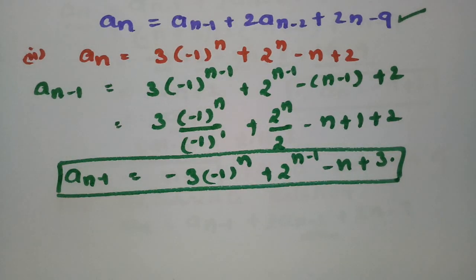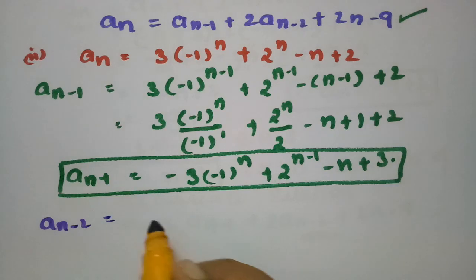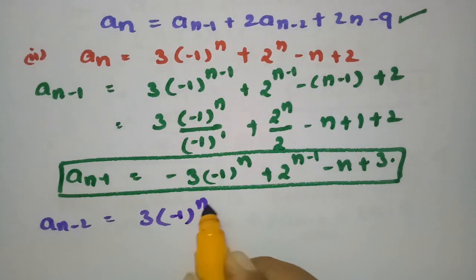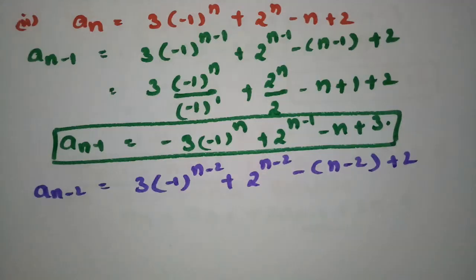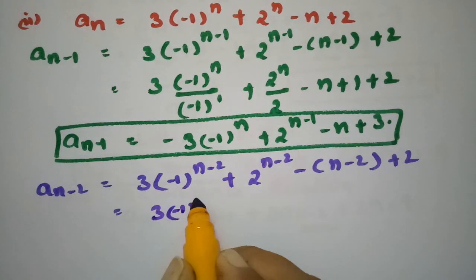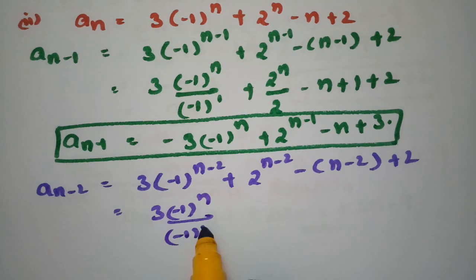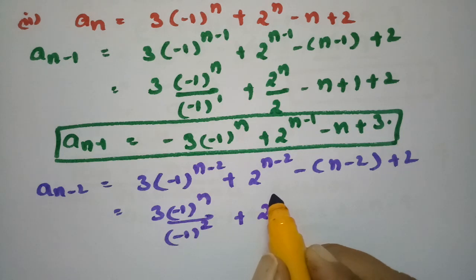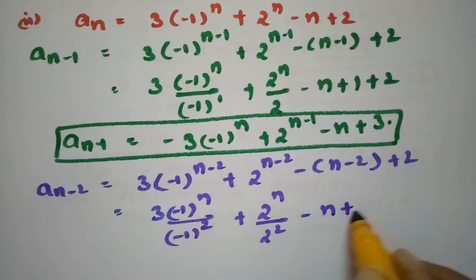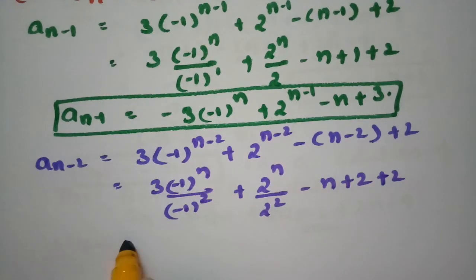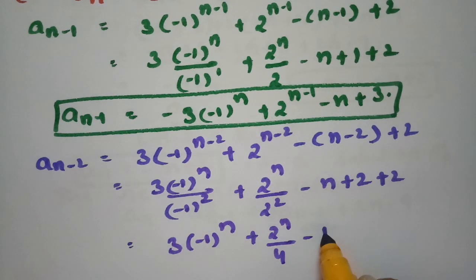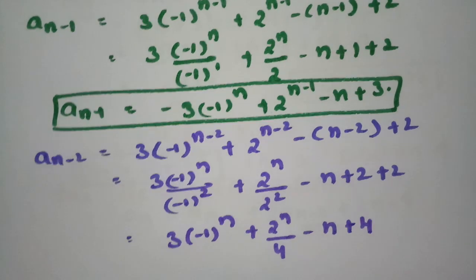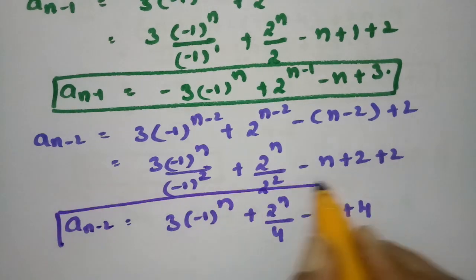For An-2, substituting n-2 in place of n: An-2 = 3·(-1)^(n-2) · 2^(n-2) + (-(n-2)+2). This becomes 3·(-1)^n / (-1)^2 times 2^n / 4, giving (-1)^2 = 1, so An-2 = 3·(-1)^n · 2^n/4 + (-n + 4).